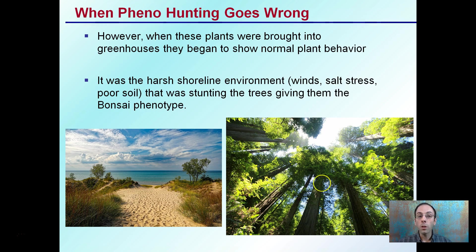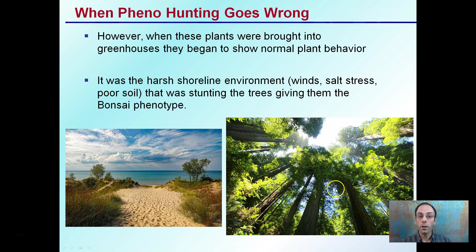The downfall was when these plants were brought into greenhouses to propagate, they began to show normal plant behavior. What was actually happening is that at the beach, saltwater, stress, winds, and poor soils were actually stunting the trees, giving them a bonsai phenotype, even though they had the genotype to grow to full-sized trees. When brought into the greenhouse, they were given a better environment and started growing normally. So again, this is a word of caution that phenohunting can go wrong because you're basing it on how a plant looks, not necessarily on its genes. The genotype and phenotype can sometimes differ.